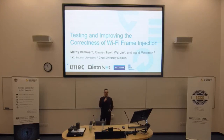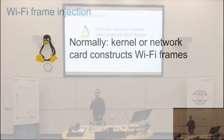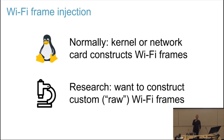Let me give a brief introduction to what I mean with frame injection. Normally, your Linux kernel or your network card will construct Wi-Fi frames and will construct a Wi-Fi header for you. But in experiments, we want to construct our own Wi-Fi frames — we want to control every bit of it, and then we want to send that Wi-Fi frame.